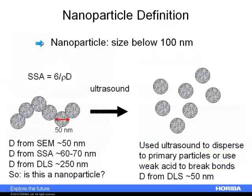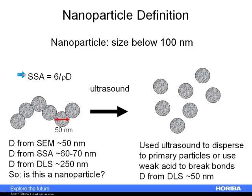The simple definition of a nanoparticle is a particle where one or more of the size scales is under 100 nanometers. But this definition gets complicated when particles are aggregated, as they often are. If we look at an individual particle that's 50 nanometers, we could call it a nanoparticle. We could take the sample, measure the surface area, and use an equation to convert from surface area to diameter — in which case, since the particles are just touching at the edge, we might say they are nanoparticles in the range of 60 to 70 nanometers.